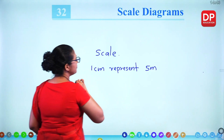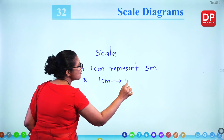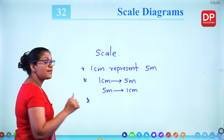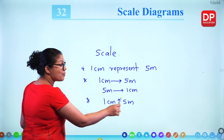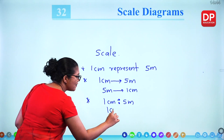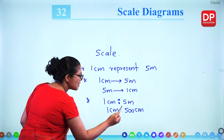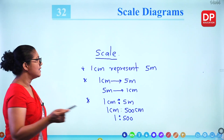Sometimes we can use arrows to represent the scale: 1 centimetre represents 5 metres, or the other way around. Or you can write it as a ratio — but when you write as a ratio you can't use different units. So we convert to the same unit: 1 centimetre to 500 centimetres, then you can write 1:500. Remember these three methods for writing a scale.